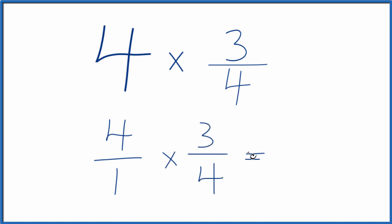When we're multiplying fractions, we multiply the numerators and the denominators. 4 times 3 is 12. 1 times 4 is 4. That's what we got before, 12 fourths.